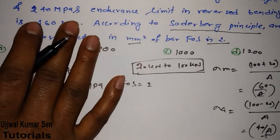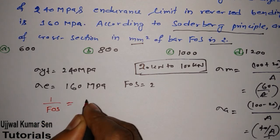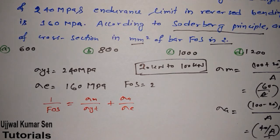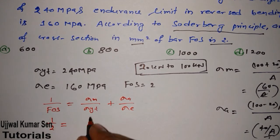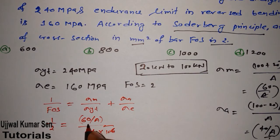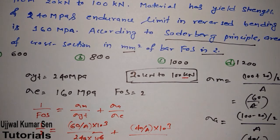Using 1/FOS = σm/σyt + σa/σe: FOS = 2, so the left side is 1/2. σm = 60/A, σyt = 240 MPa = 240×10⁶ Pa, and since the load is in kilonewtons we multiply by 10³. σa = 40/A × 10³, and σe = 160×10⁶ Pa.